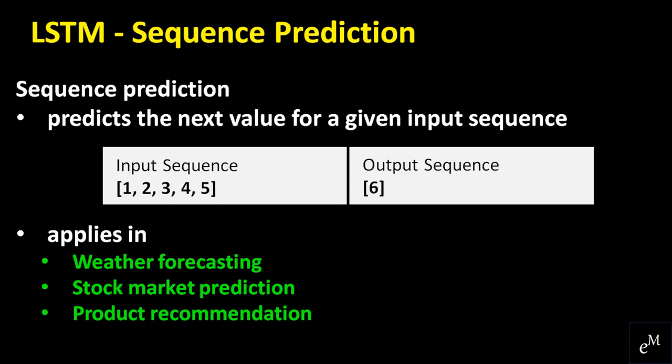The first problem type is sequence prediction, which involves predicting the next value for a given input sequence. For example, if the input sequence is 1, 2, 3, 4, 5, we expect the output to be 6. Sequence prediction may also be referred to as sequence learning, and it can be applied in weather forecasting, stock market prediction, and product recommendations. For weather forecasting, given a sequence of weather observations over time, we can predict the expected weather tomorrow. For stock market predictions, given a sequence of stock movements, we can predict the next movement. For product recommendations, given a sequence of past purchases from a customer, we can predict their next purchase.